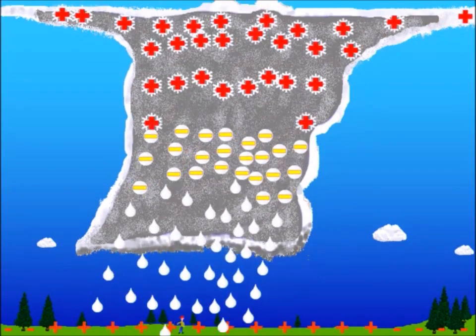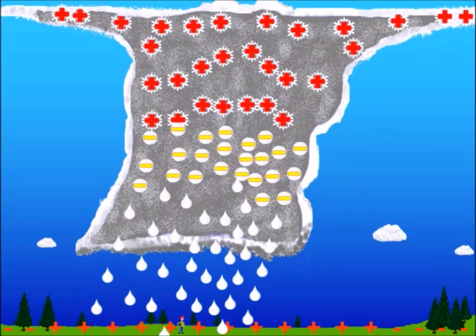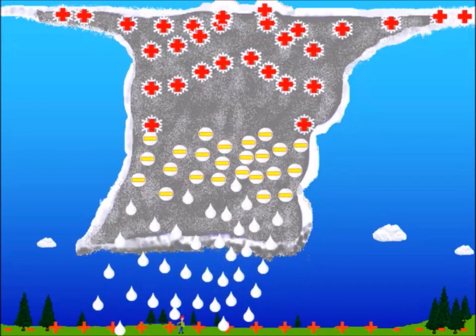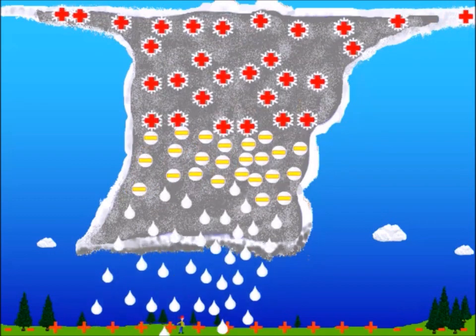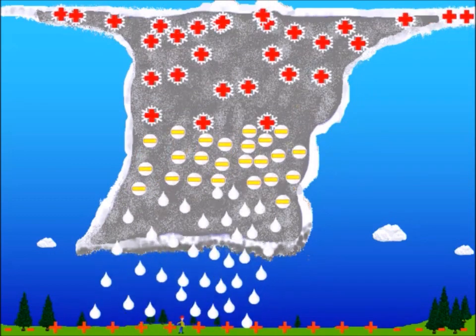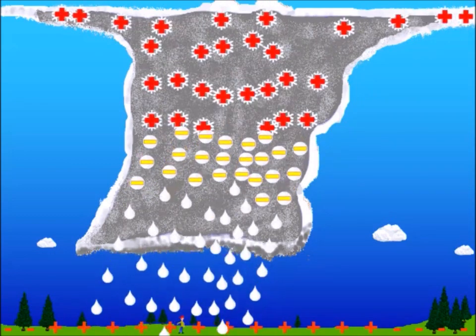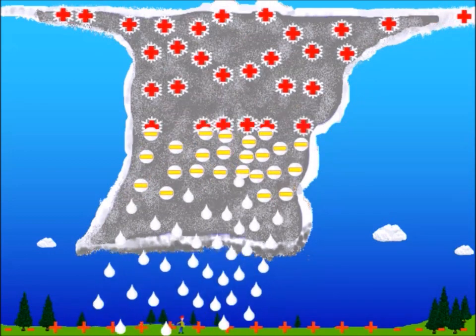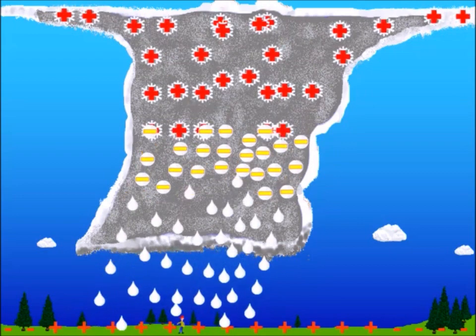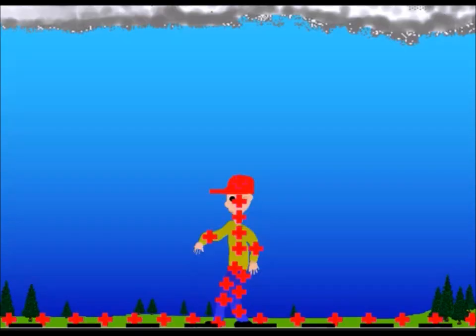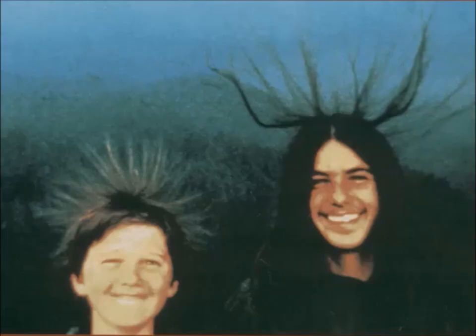Those negative charges in the middle and lower part of the storm cause positive charges to build up on the ground under and near the storm cloud. If you're outside, those charges could build up on you, which is a dangerous and potentially deadly situation.